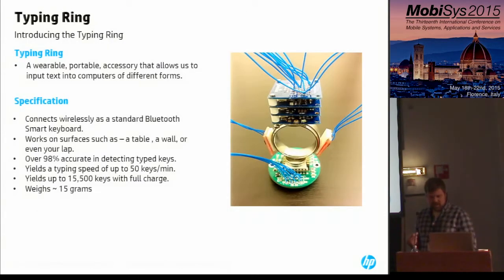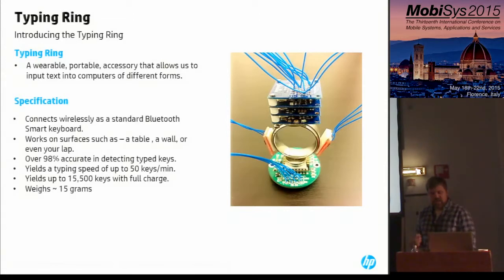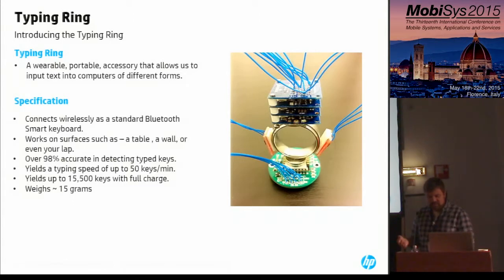So we introduce Typing Ring — a wearable keyboard in the form factor of a ring. The user wears the ring on the middle finger and can type text with three fingers: the index finger, the middle finger which has the ring, and the ring finger. You do this on a surface such as a table, your lap, or a wall. It connects wirelessly as a standard Bluetooth Smart HID keyboard, it's over 98% accurate in detecting typed keys, yields a typing speed of up to 50 keys per minute, up to around 16,000 keys on a full charge, and weighs only about 15 grams.